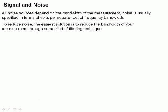Now, as we saw, all three noise sources depend on the bandwidth of the measurement, delta F, given by the square root of delta F. And noise is usually specified in terms of volts or amps per square root of frequency bandwidth. What does this mean? It means that in order to reduce noise, the easiest solution in most measurements is simply to reduce the bandwidth of your measurement through some kind of filtering technique.